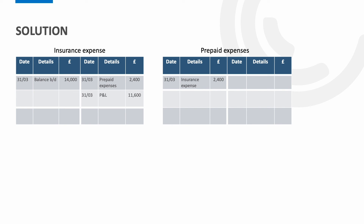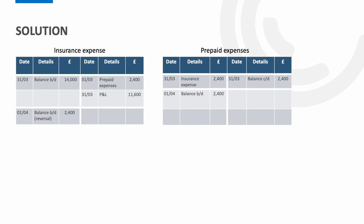We then balance off the prepaid expenses account by showing the balance carried down, which will then be brought down in the new financial year. At the start of the next financial year the prepayment is reversed. To do this we debit the insurance account for £2,400 and credit the prepaid expenses for £2,400. The effect of this is that we have a nil balance on our prepaid expenses account and a £2,400 debit balance on our insurance expense account, and therefore we have successfully moved the prepaid insurance from the prior year into the new year.